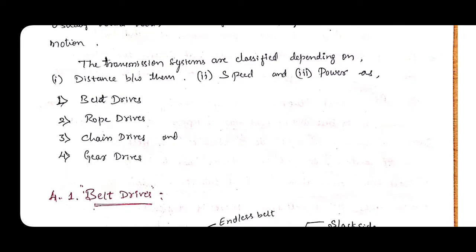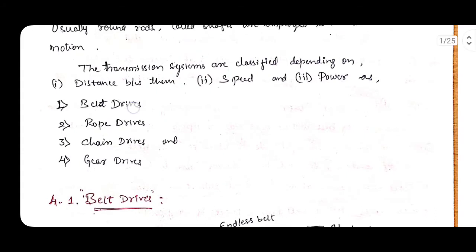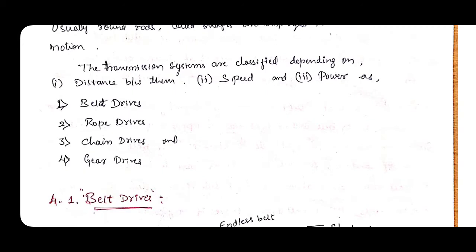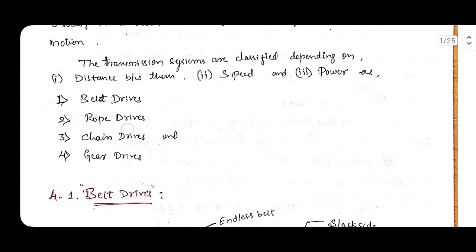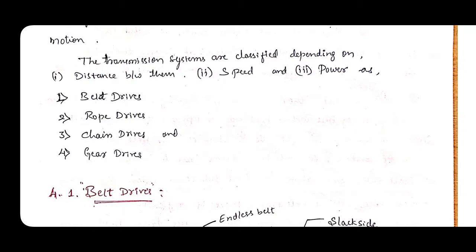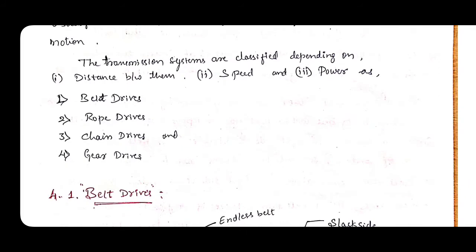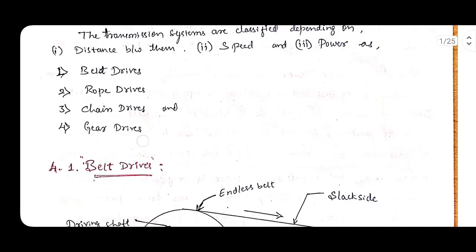One type is belt drive, mainly used for long-distance power transmission. You have seen belt drives in many applications such as automobiles, milling industries, and many small power-generating devices. Rope drives are mainly used in power-lifting applications. Chain drives can be seen in bicycles and automobiles. Gear drives are a main element used for power transmission in automobiles and many machines.